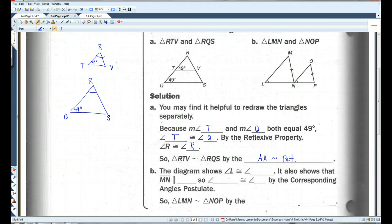This one's a little bit trickier. Triangle LMN and NOP. We know that this angle is congruent to this angle. The diagram shows that. It also shows that this and this are parallel.